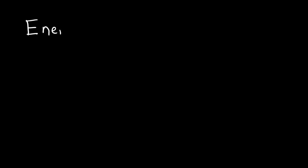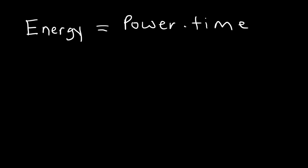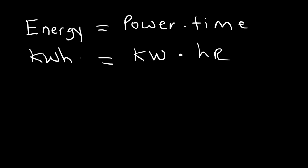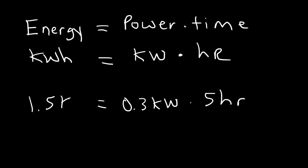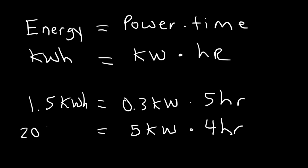As mentioned before, the amount of energy transferred equals power multiplied by time. If you take the power in kilowatts and multiply by the time in hours, you get the number of kilowatt hours. For example, if you're running a laptop that uses 0.3 kilowatts and you use it for five hours, the energy consumed is 1.5 kilowatt hours. Or if you're running a refrigerator that takes 5 kilowatts for four hours, the total energy used is 20 kilowatt hours.